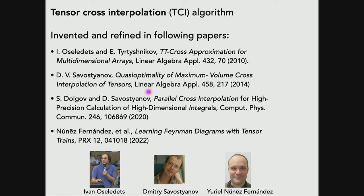It's also gotten popular in some corners of physics recently after the Feynman diagram paper came out. Some of the key people behind this include Ivan Oseledets, who also coined the term tensor train, and Dmitry Savostyanov, who has nice papers about a parallel implementation of this TCI algorithm. More recently, a collaboration led by Uriel Núñez-Fernández with people like Xavier Waintal, Olivier Parcollet, Jason Kaye, and others refined some details of the method and have a new paper coming out connecting to concepts from linear algebra.